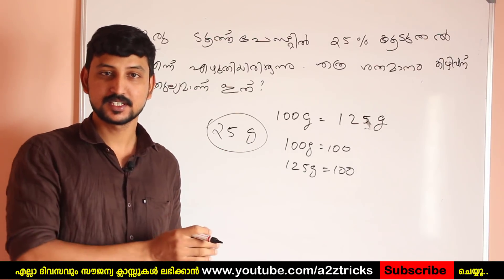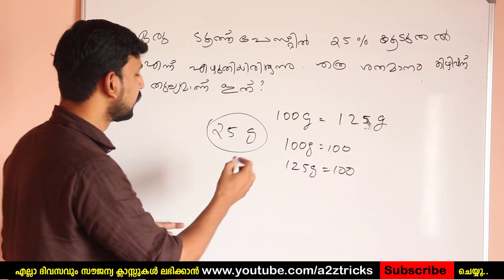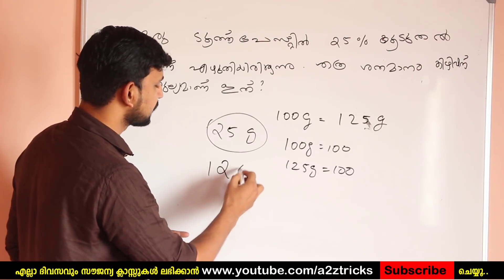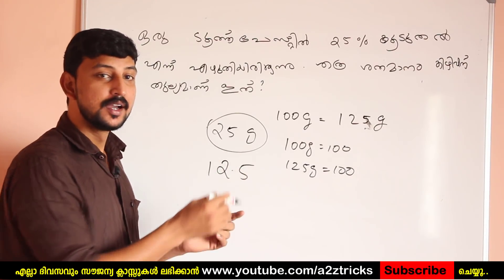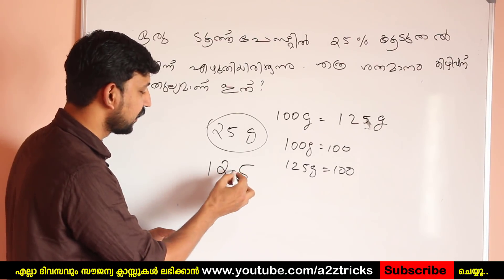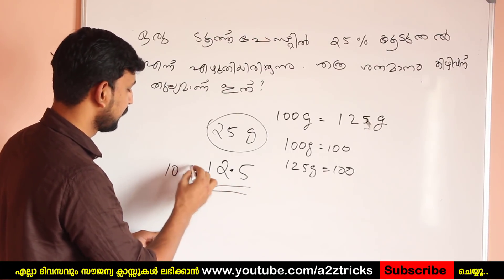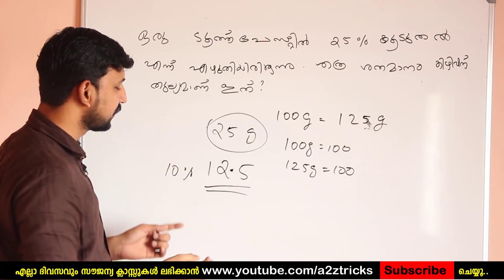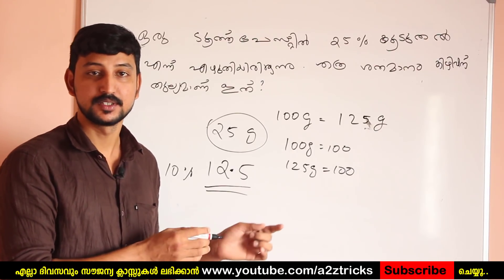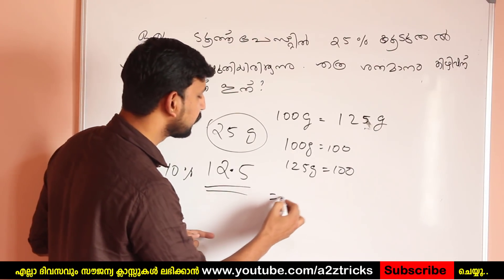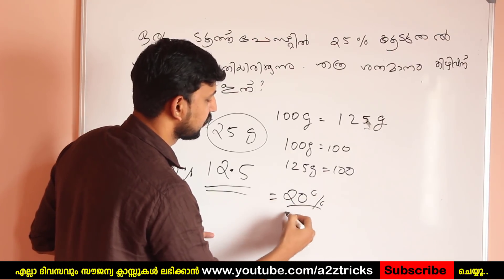If you have 10 RMB, you can have a point here. 15 RMB is 10 RMB. 25 RMB is a point here. The first is 20 RMB.